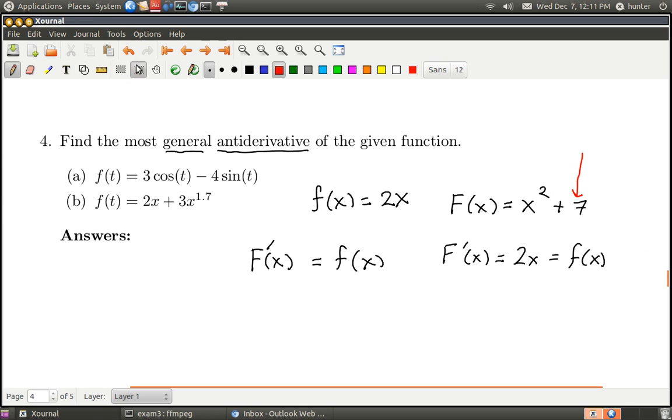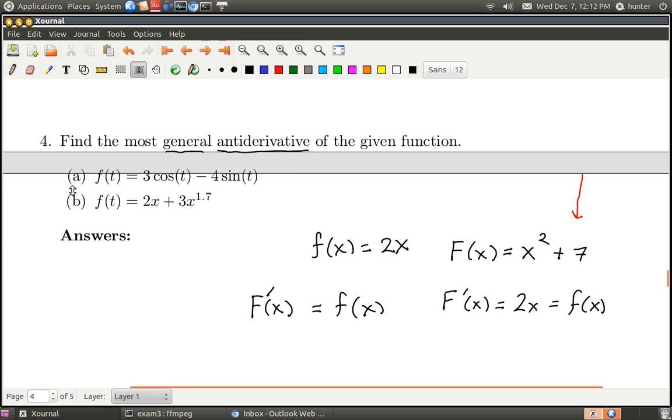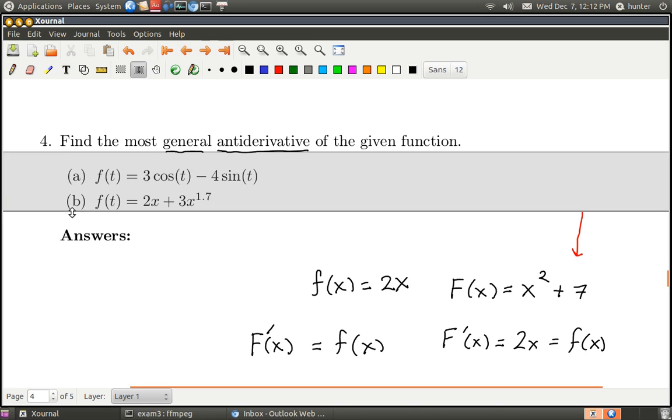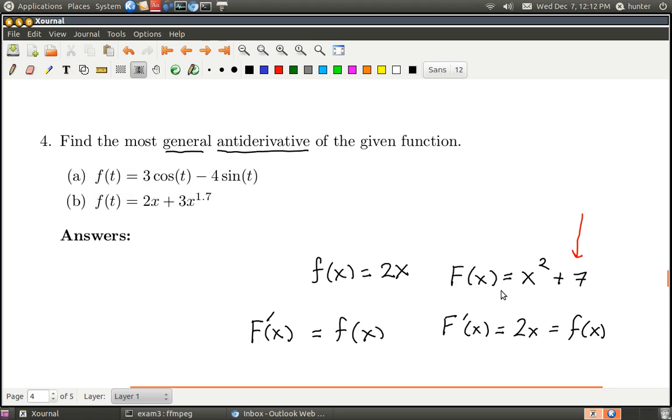And you can see that that's true no matter what I put in for 7. So there's this theorem that we learned when we were studying the mean value theorem which says that all antiderivatives differ by a constant, and so that's saying that there are no surprise or secret antiderivatives of 2x. They're all just what you would think, x squared, but then you can change the constant at the end. So when it says write the most general antiderivative, what it means is just leave that constant represented by a letter.